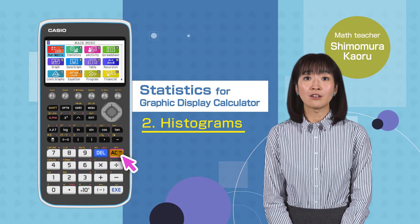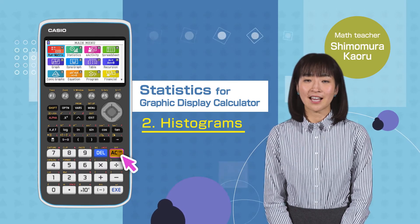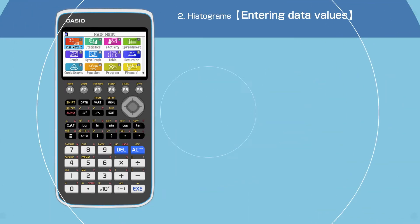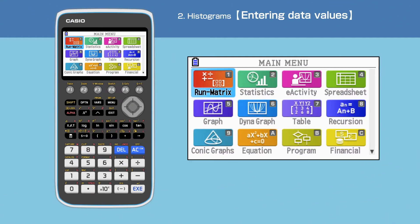Switch on your calculator by pressing the AC button. Press the menu button to open the main menu, then move the cursor or press 2 to choose the statistics function.